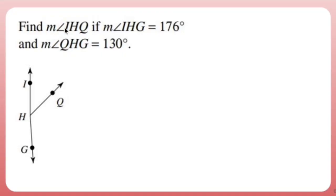This means the measure of angle IHQ. So find the measure of angle IHQ if the measure of IHG is 176 degrees and the measure of QHG is 130 degrees.